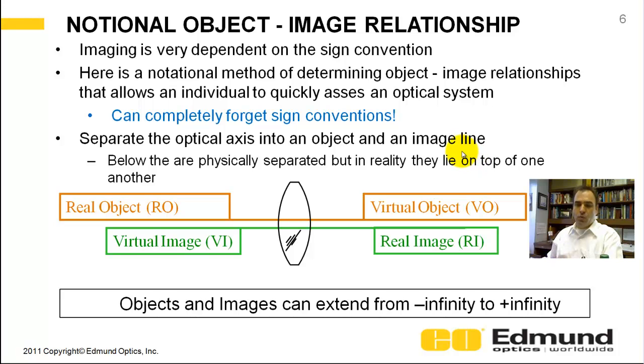So here's a notional way to have a nomograph to understand how a simple lens works. And again, I find it incredibly powerful and very important. You have an optical axis, and on that optical axis rests your objects. Your object and your images can extend from plus and minus infinity. It's a very important concept to get in imaging.